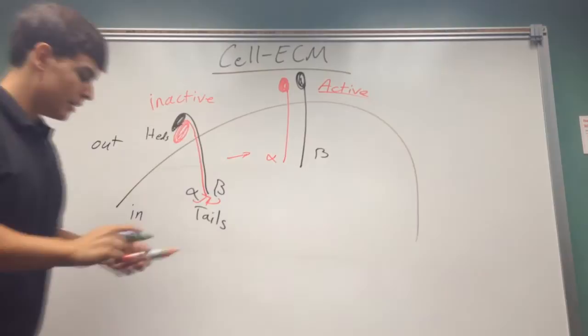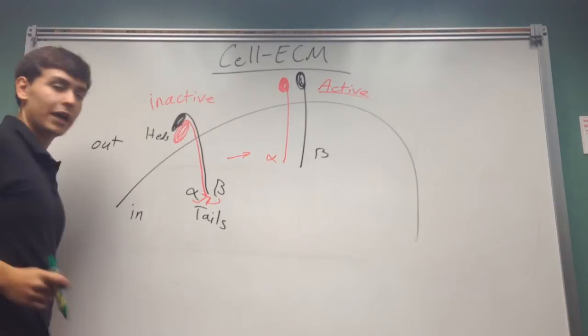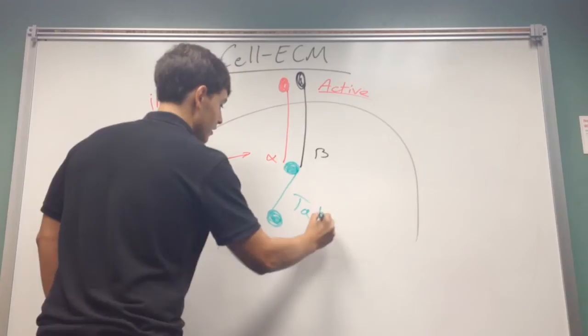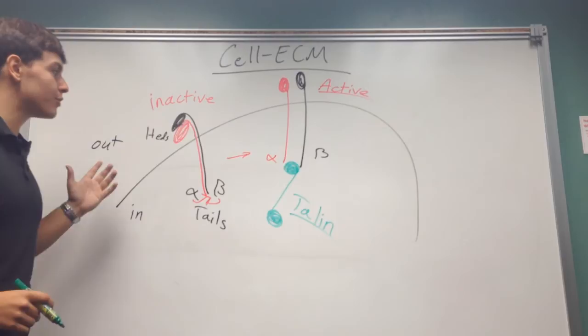And, the thing that does that, and what we looked at a whole bunch, was the cytoplasmic protein, talin. So, talin can come in and separate out the two tails. So, essentially, that's how you can regulate the on and off of integrins by the talin coming and integrating.